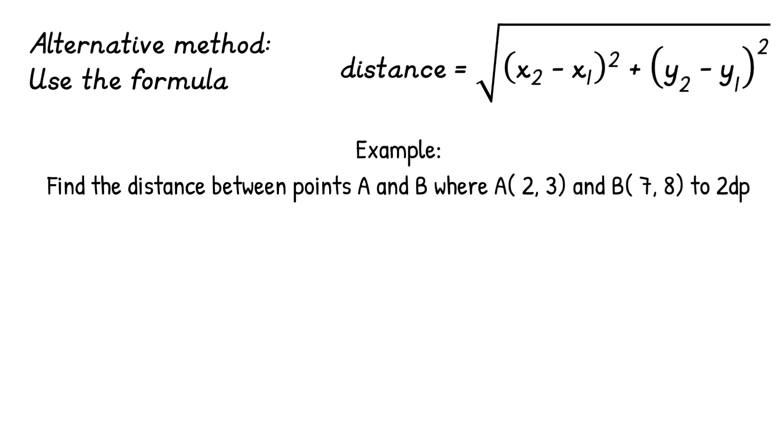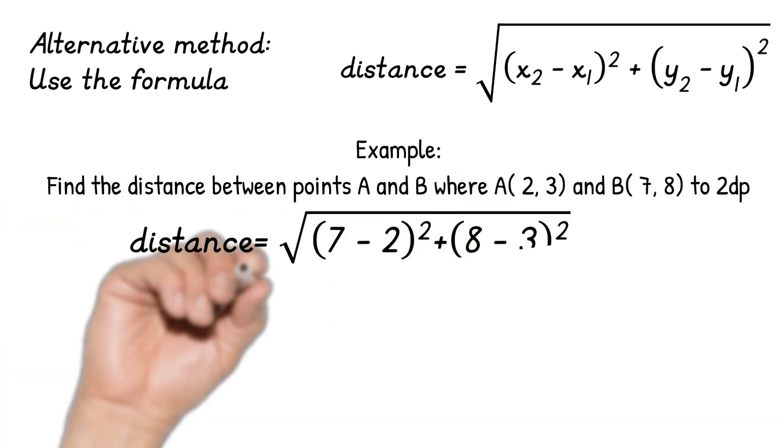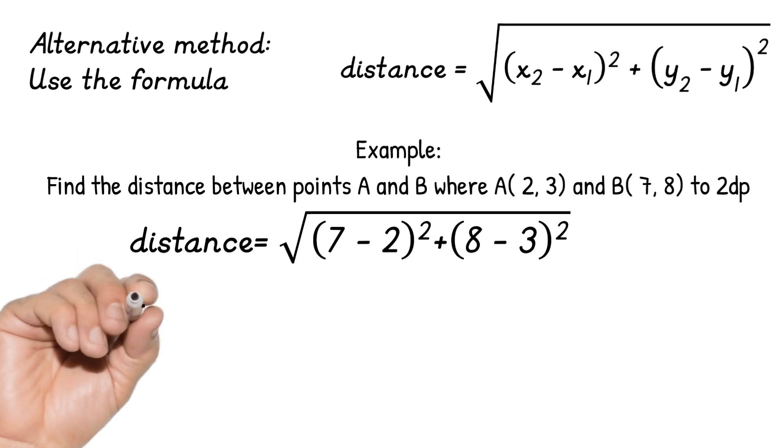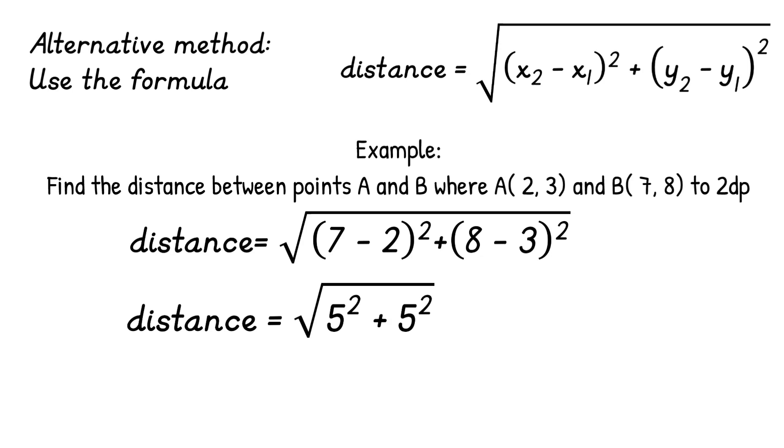So basically just plug into this equation. So x₂ is 7, x₁ is 2, y₂ is 8, y₁ is 3. 7 - 2 is 5, 8 - 3 is 5. Asking us to square it again: 5² + 5² is 50, and so when you square root 50 you get 7.07. So you've got the same answer using both methods.